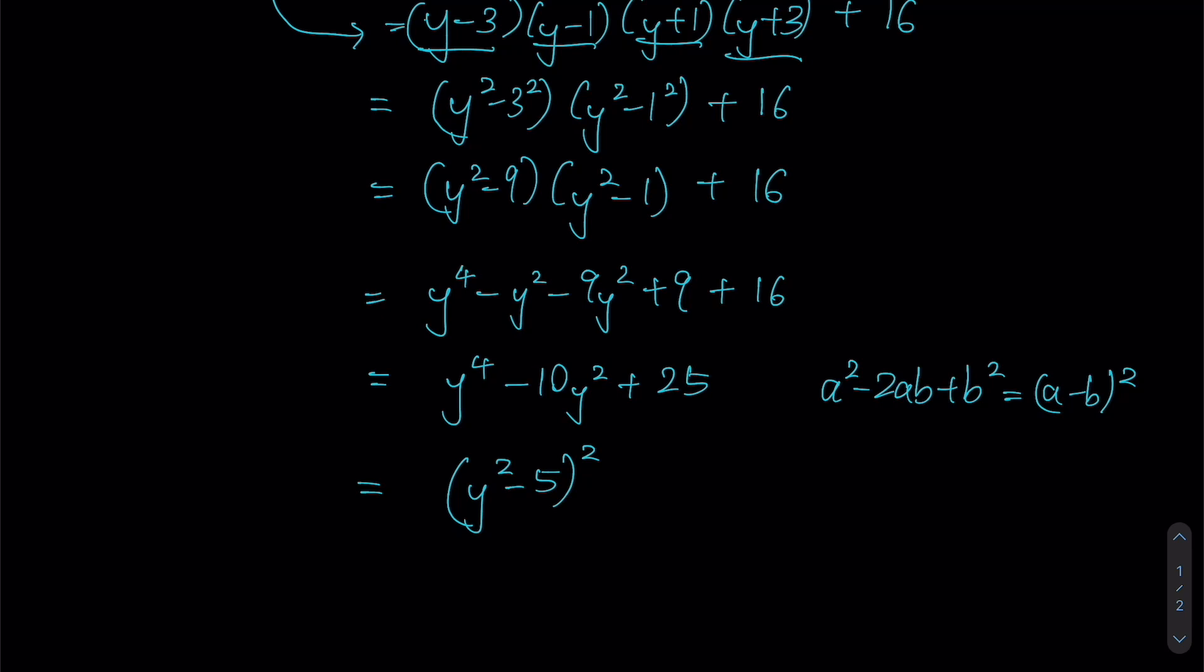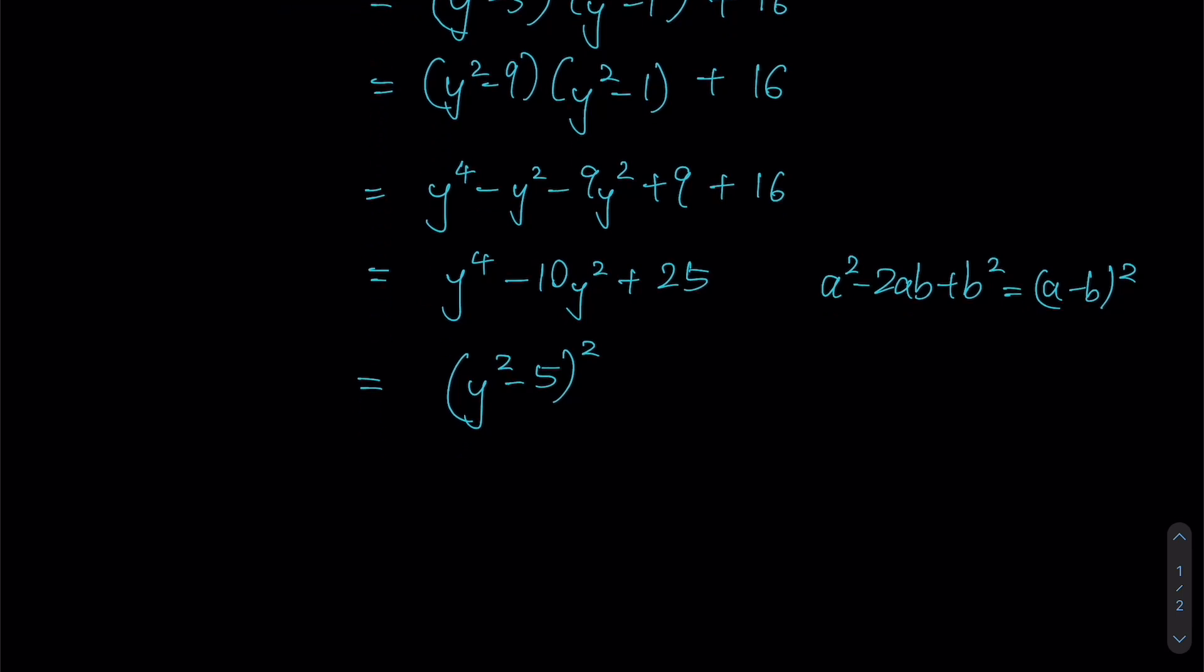Therefore the above can be factorized into (y² - 5)². But that's not the end, because the original question came in terms of x. So if we substituted x with y, we're going to have to switch it back to x. Let's bring our friend x back into the equation: (x + 2)² - 5, whole thing squared.